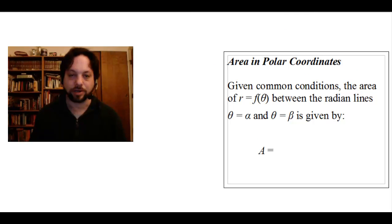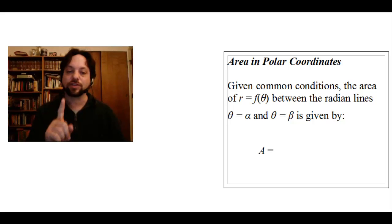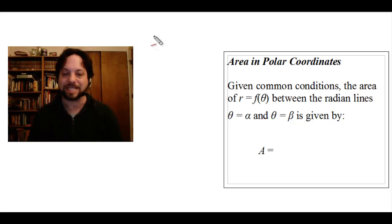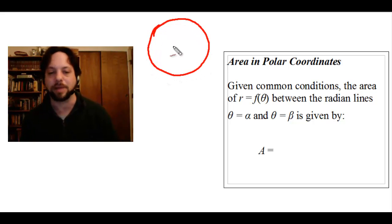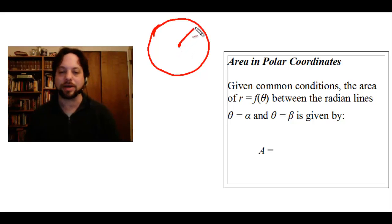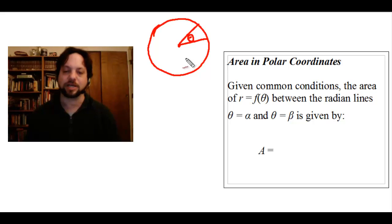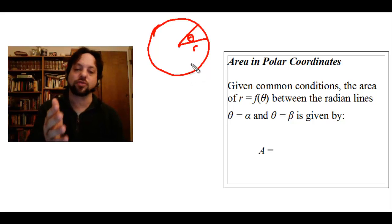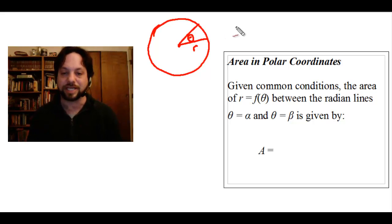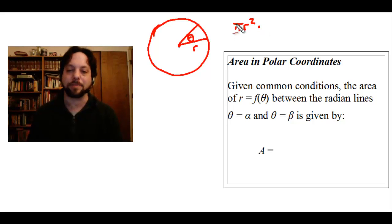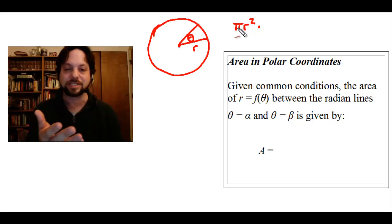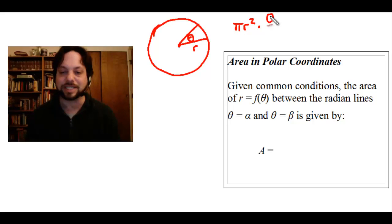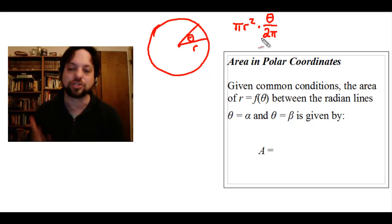Before we explore the integral for the area of a polar region, let's first take a look at some basic geometry. If I draw a circle, we need to find the area of a sector of that circle with central angle theta and radius r. The way to do this is to find the entire area of the circle — pi r squared — and then multiply by whatever fraction of the circle that sector represents. The sector has a central angle of theta, and the entire circle is 2π radians.